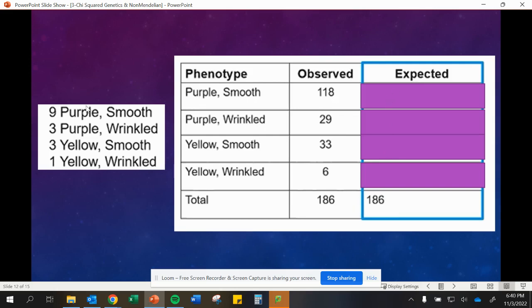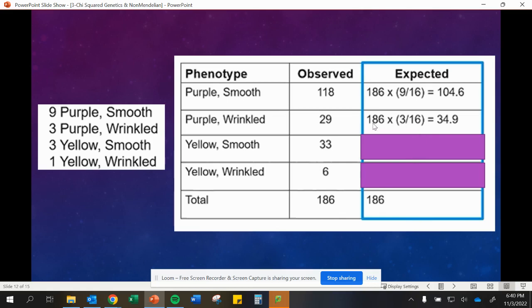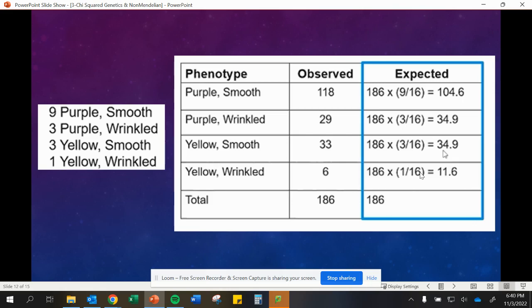If we have 9 of those being purple and smooth, that's 9 out of the 16, and we got 16 from adding up all of these. 9 of our 16, we're going to multiply that by our 186 total to give us, we should have about 104.6 being purple and smooth if that's based on our expected. Same idea for our purple wrinkle, 186 times 3 over 16. Same for this one as well. Our next is 1, so 186 times 1 over 16, so 11.6. Remember, we do need to keep, even though we can't technically have part of an offspring, we are going to keep these decimal points because it's going to affect our number in the long run.